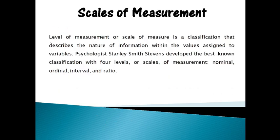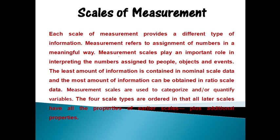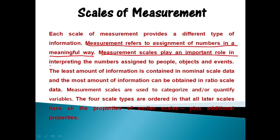Level of measurement or scale of measure is a classification that describes the nature of information within the values assigned to variables. Psychologist Stanley Smith Stevens developed the best known classification with four levels or scales of measurement: nominal, ordinal, interval, and ratio. Each scale of measurement provides a different type of information. Measurement refers to assignment of numbers in a meaningful way. Measurement scales play an important role in interpreting the numbers assigned to people, objects, and events.